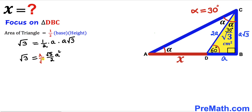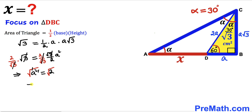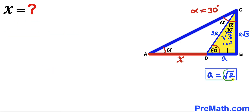Multiplying both sides by 2 divided by square root of 3, the square root of 3 terms cancel, giving a squared equals 2. Taking the square root of both sides, lowercase a equals positive square root of 2 centimeters. Therefore segment DB equals square root of 2 and the CD length equals 2 times square root of 2.